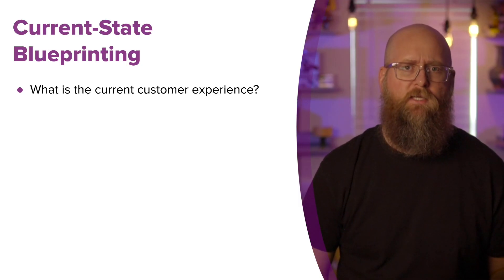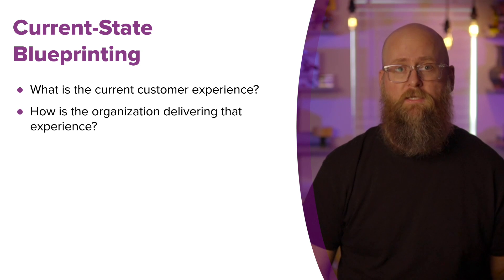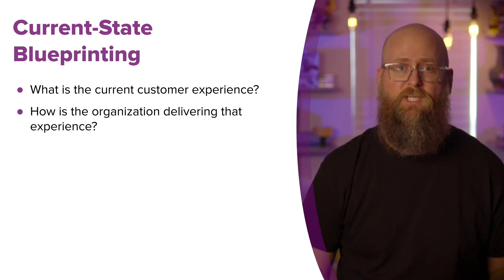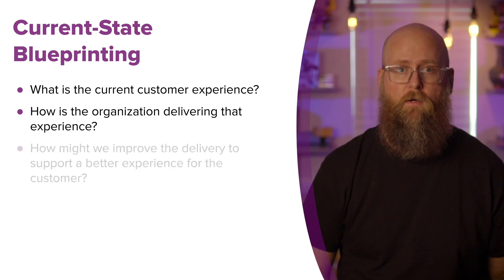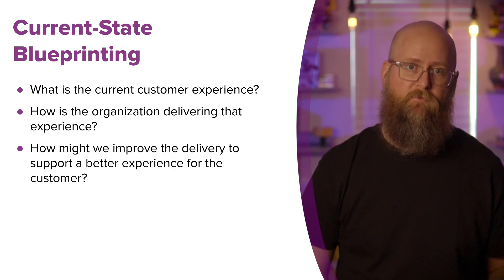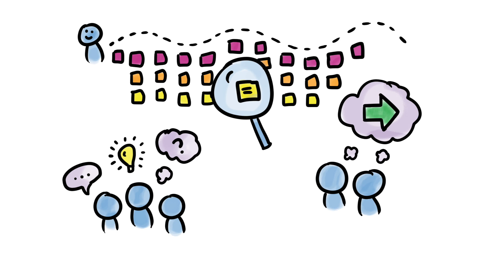A current state blueprint looks at an existing experience to answer the following questions: What is the current customer experience for particular key scenarios? How is the organization delivering that experience through processes, systems, people, policies, and more? And how might we improve our delivery to support a better customer experience? By mapping your current experience end-to-end and looking at how your organization delivers that experience — surface to core — we get a clear picture of what's working, where the critical moments or breakdowns are, either backstage for the organization or front stage for the customers, and where there are opportunities for improvement, either tactical or strategic.